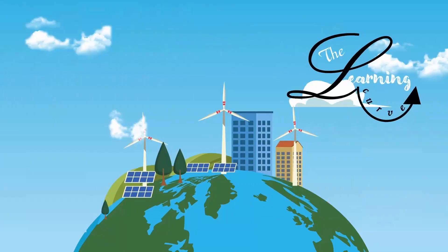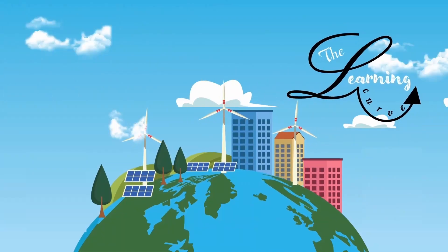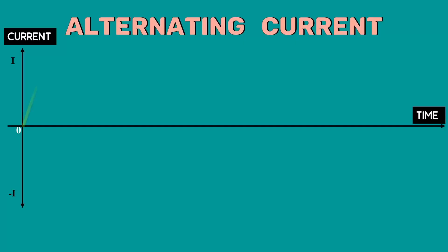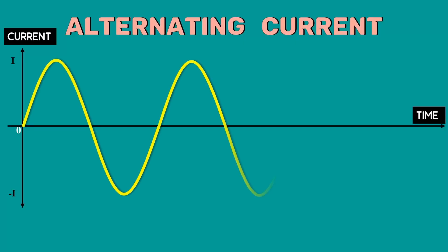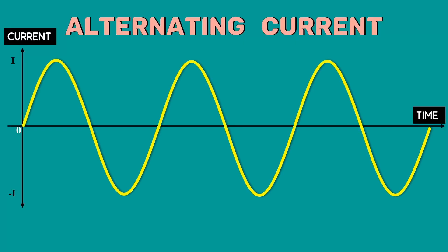Hi, I am Venila and you are watching The Learning Curve. The electrical energy is normally generated, transmitted and distributed in the form of alternating current or AC.